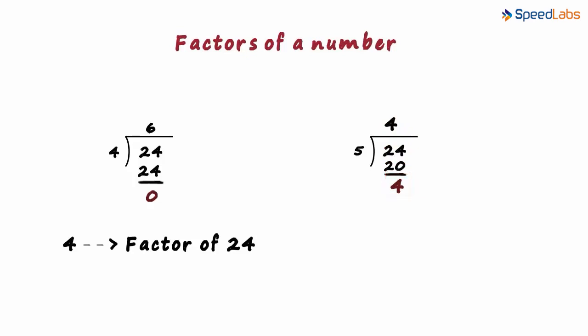Since the remainder is not 0, we can say that 5 is not a factor of 24.